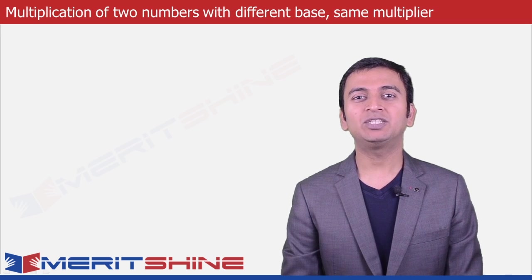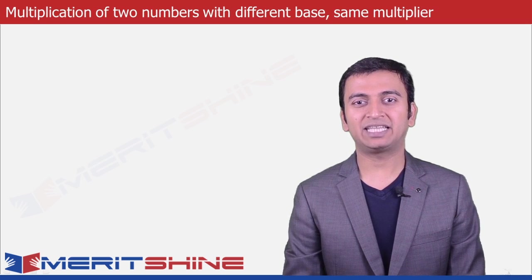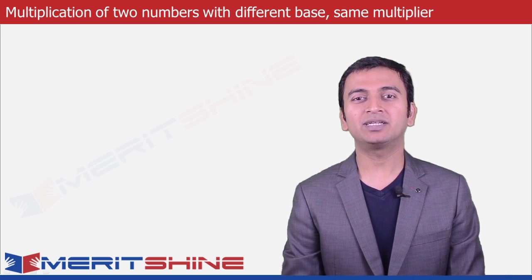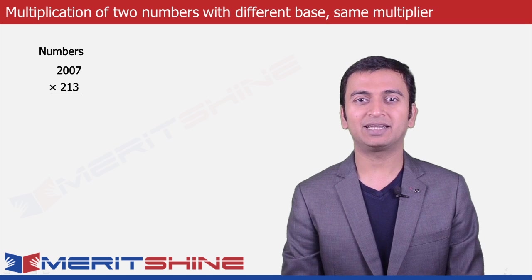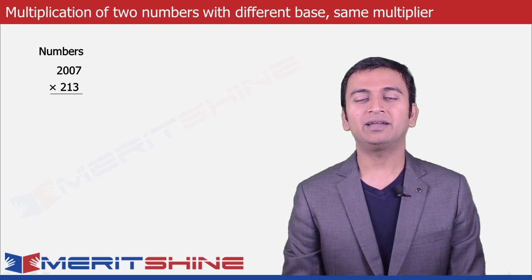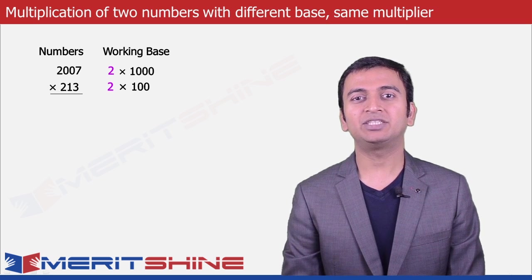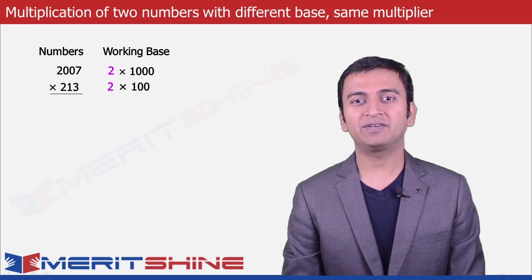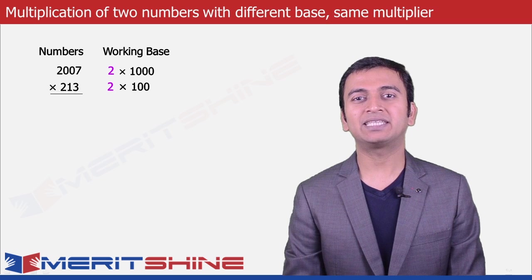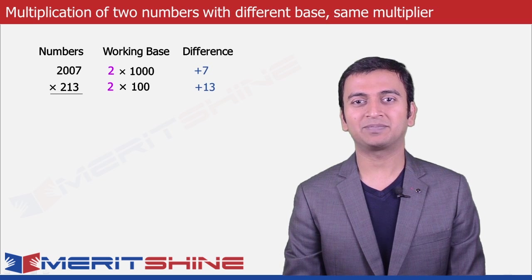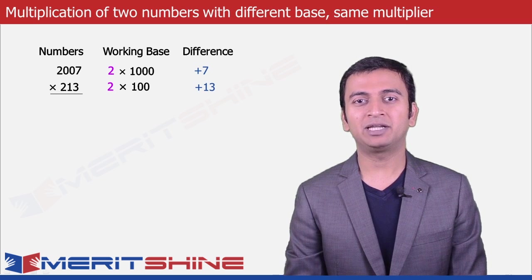Let us begin by taking 2007 and 213 as an example. Here our working base would be 2 into 1000 and 2 into 100, and our differences would be 7 and 13 respectively. Note that our multiplier is 2.